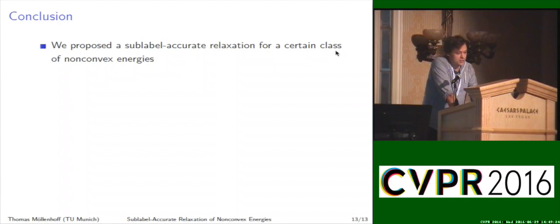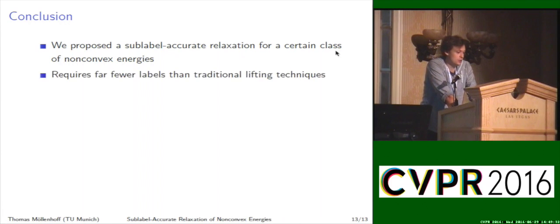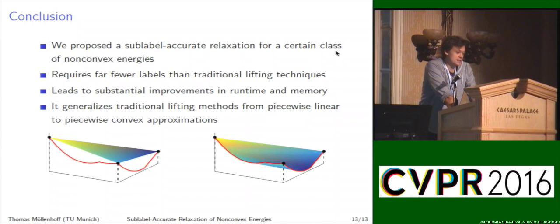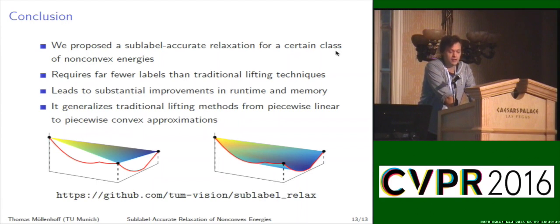To conclude, we proposed the first spatially continuous sub-label accurate relaxation for a certain class of non-convex energies, which can be written as the sum of a non-convex data term plus the total variation. We require far fewer labels than the traditional lifting techniques, leading to substantial improvements in runtime and memory. This generalizes the traditional lifting methods from piecewise linear to piecewise convex approximations. Thank you very much. Code is online.